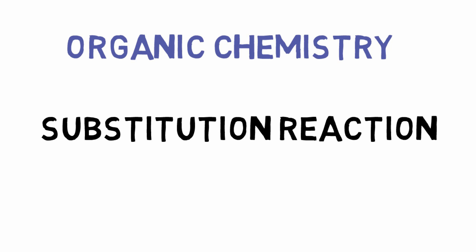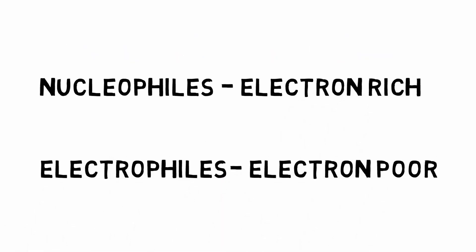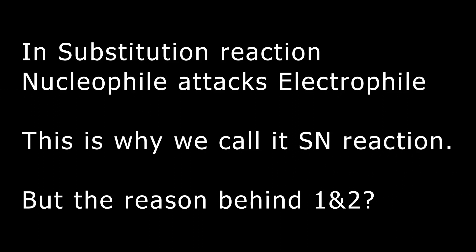Most of the reactions in organic chemistry occur between a nucleophile and an electrophile. A nucleophile is a compound that is electron rich or has higher electron density or is negatively charged. On the other hand, an electrophile is a compound either positively charged or has a low electron density region. In a substitution reaction, a nucleophile is attacking an electrophile. That's why it is called SN reaction.